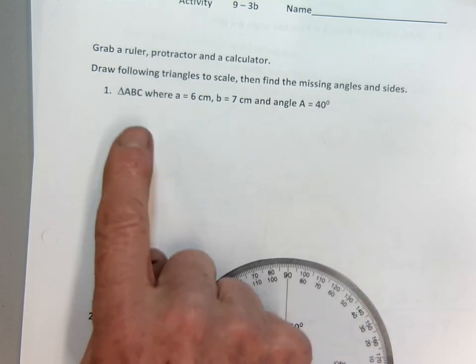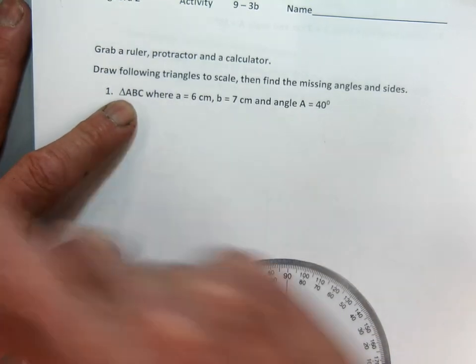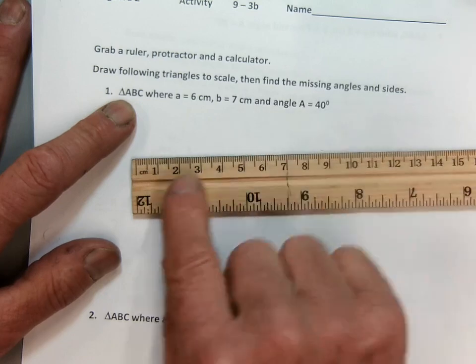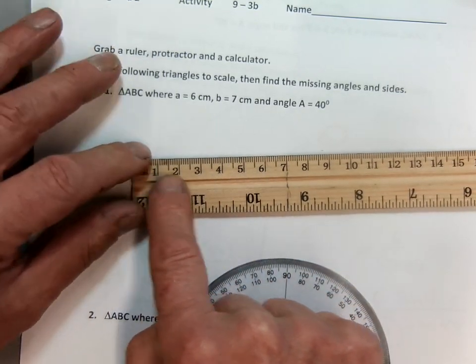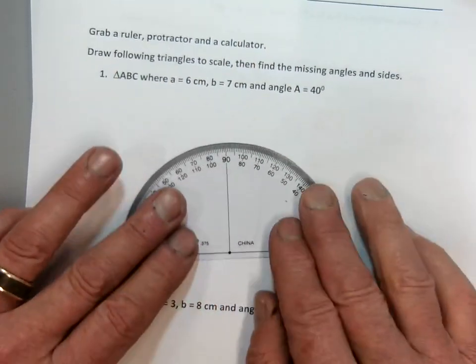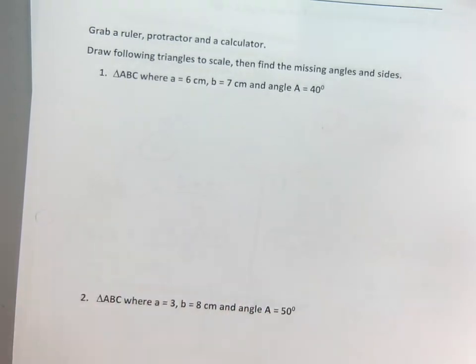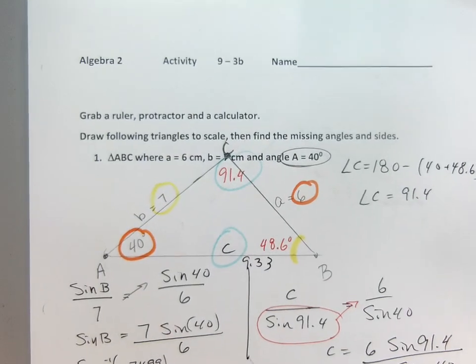So we're going to draw a triangle ABC where a is going to be six centimeters long, b is going to be seven, and angle A is going to be a 40 degree angle. I have already drawn it and I'll show you how I got this answer.